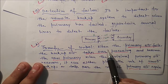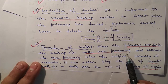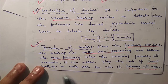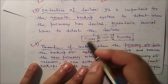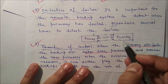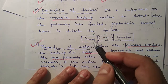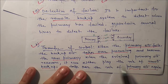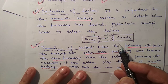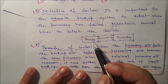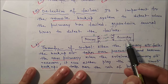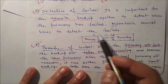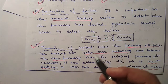Transfer of control: when the primary site fails, the backup site takes over processing and becomes the new primary. When the original primary site recovers, it can either play the role of remote backup or take over the role of primary site again. If it fails, the secondary works as the primary site. When it is ready again, it may work as a secondary or once again take the role of primary site and take control of the whole transaction.